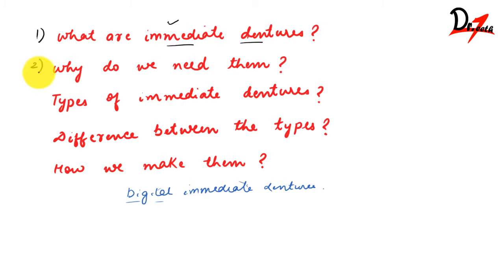Why do we need immediate dentures? The patient may be very conscious and does not want to be without teeth for even an hour — maybe a celebrity or someone in a profession where they interact with many people. Such patients need to have dentures immediately, which is why we need them.